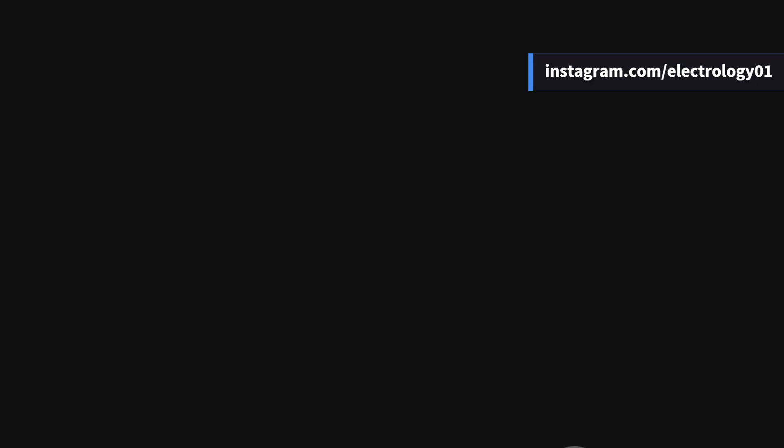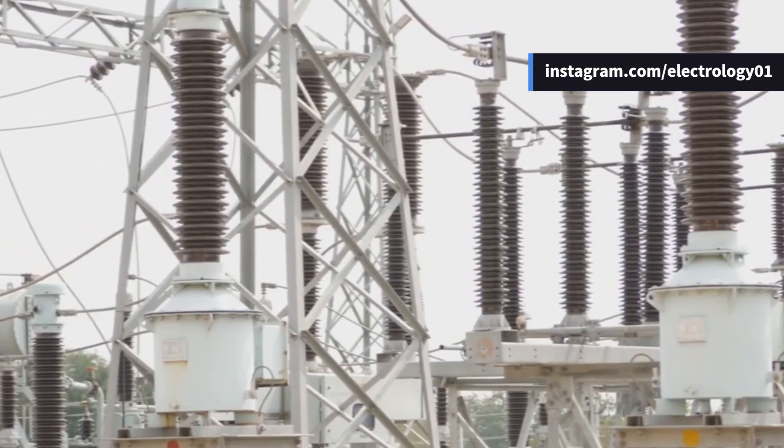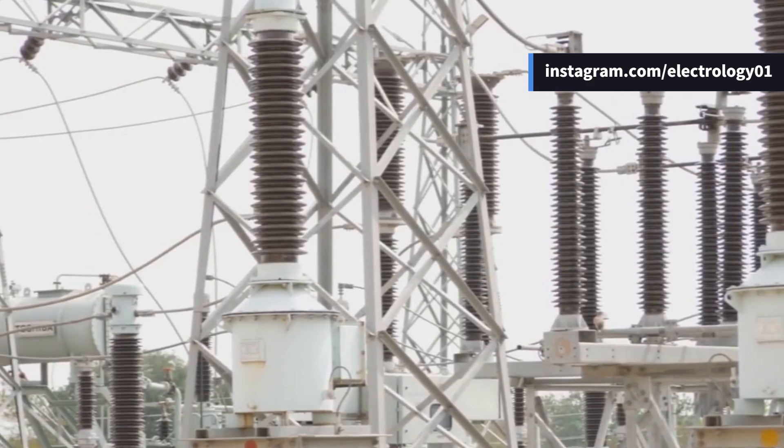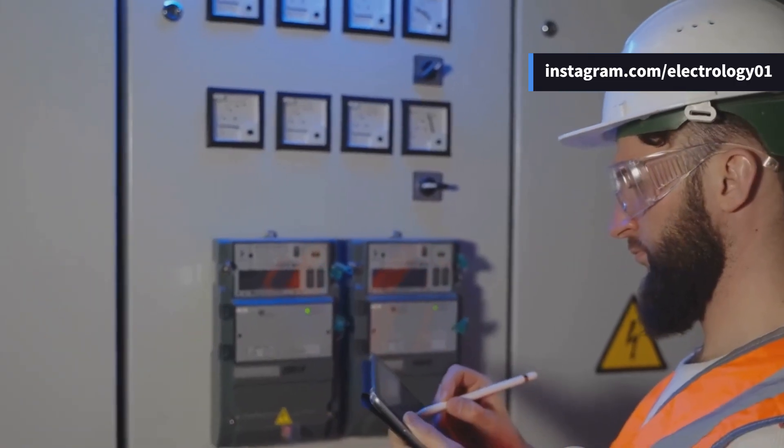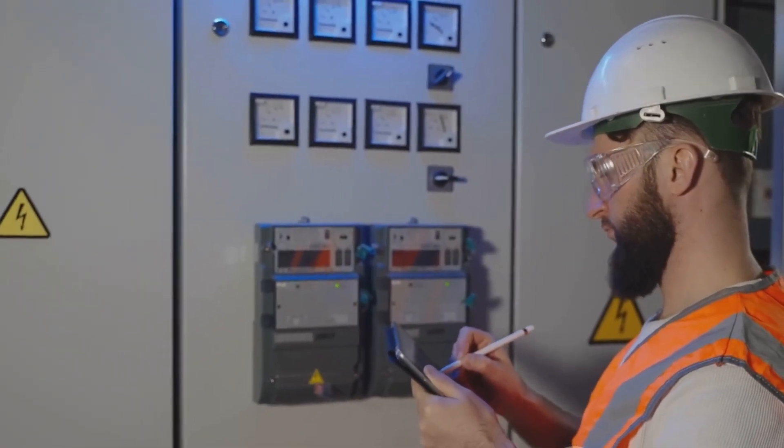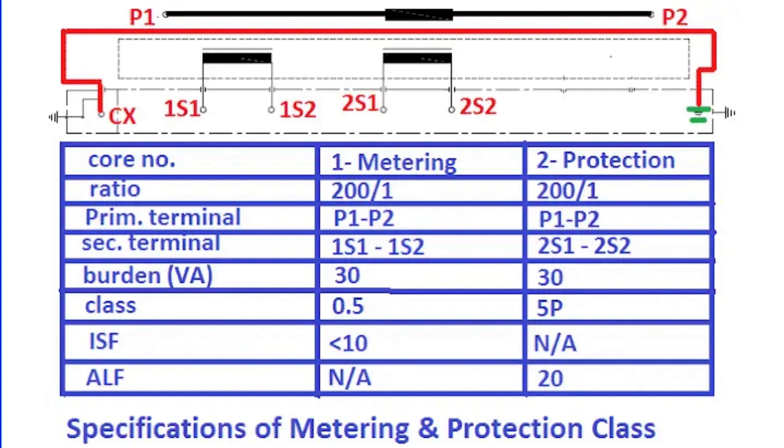Current transformers or CTs are an integral part of power systems. They are broadly categorized into two types based on their application: metering CTs designed for accurate measurement during normal operating conditions, and protection CTs designed to operate accurately during fault conditions. Each type of CT serves a unique purpose and using one in place of the other can have serious consequences.